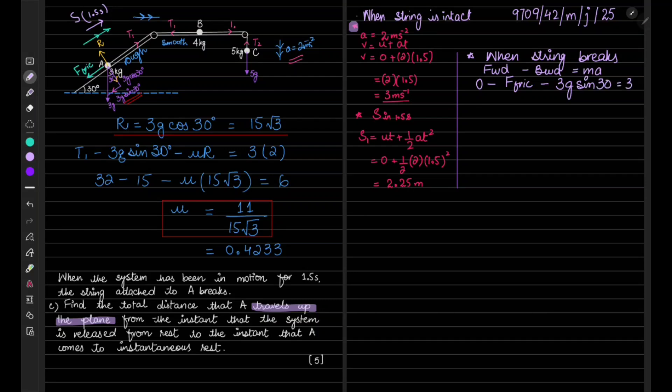Minus 3g sin 30. What is mass? 3 kg is the mass. Now frictional force is mu R minus 3g sin 30 is going to be 3 times 10 times sin 30, which is half, equals 3a.